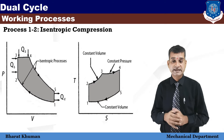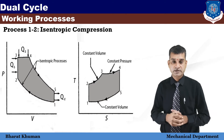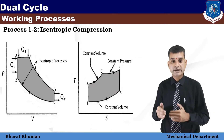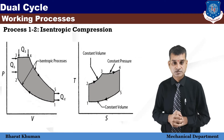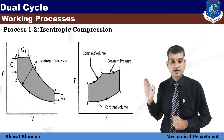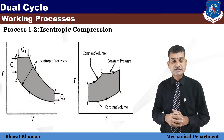A dual cycle consists of five processes: Process 1-2, isentropic compression; Process 2-3, constant volume heat addition; Process 3-4, constant pressure heat addition; Process 4-5, isentropic expansion; and Process 5-1, constant volume heat rejection.